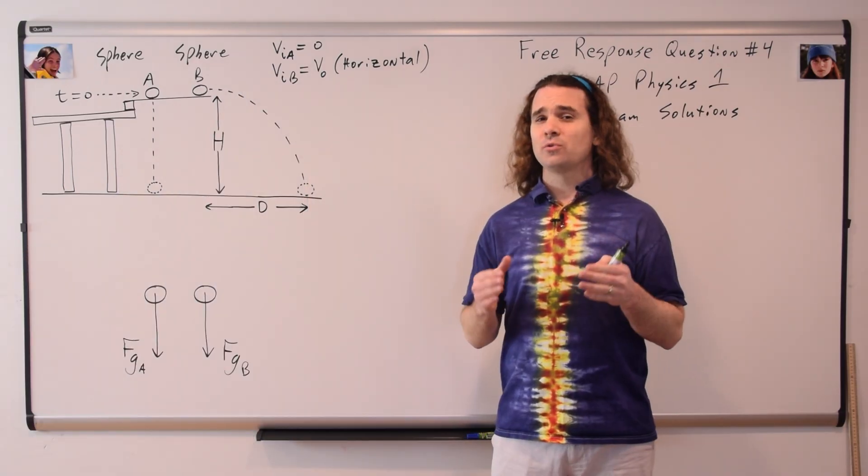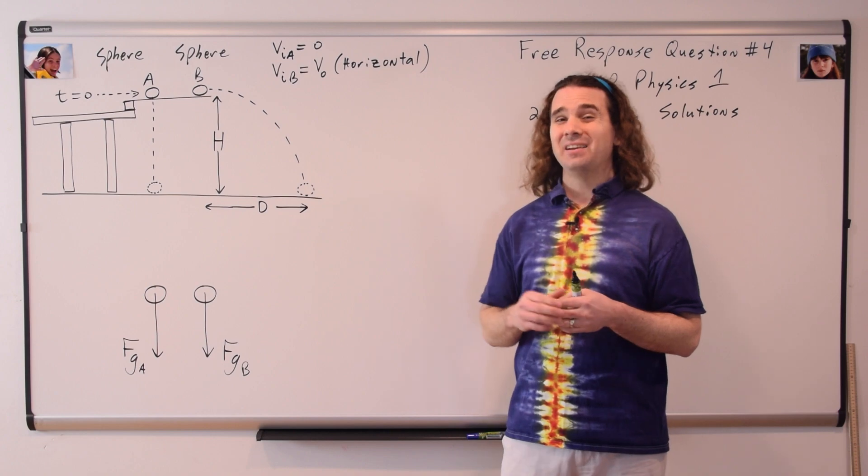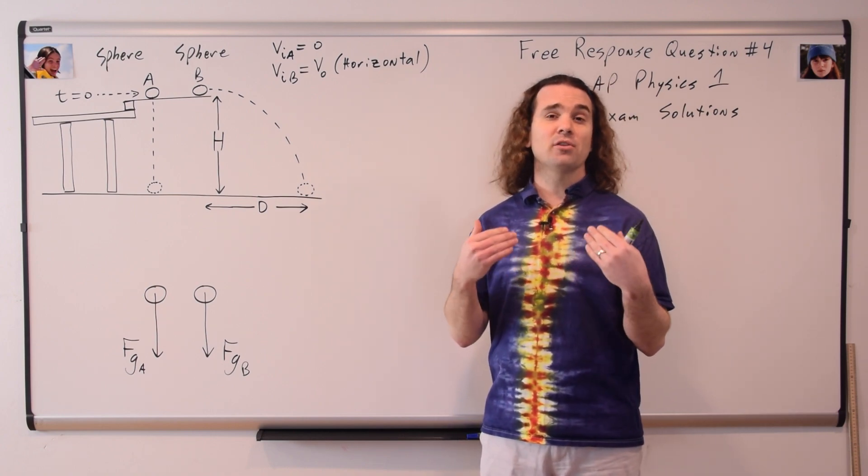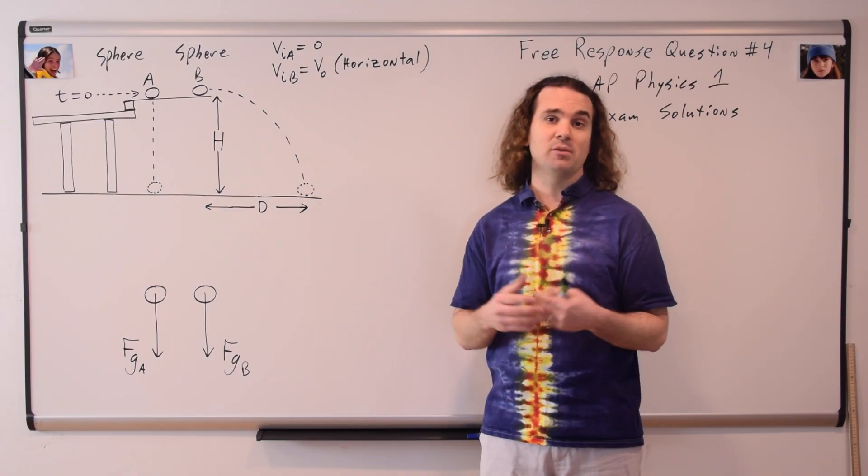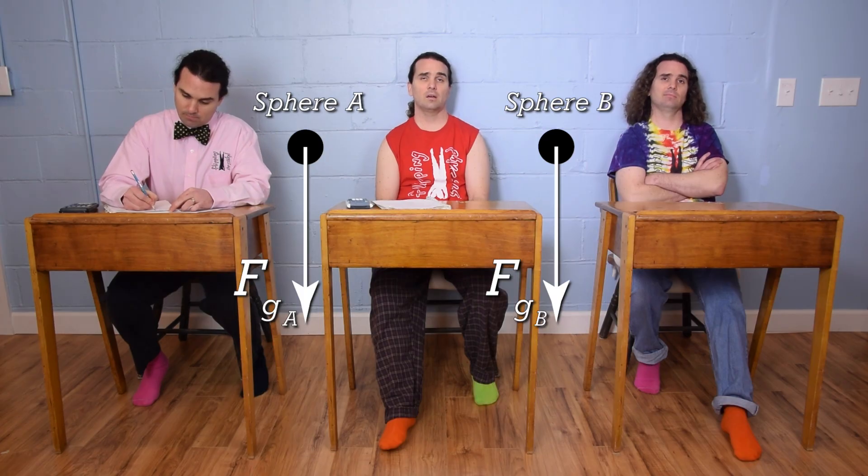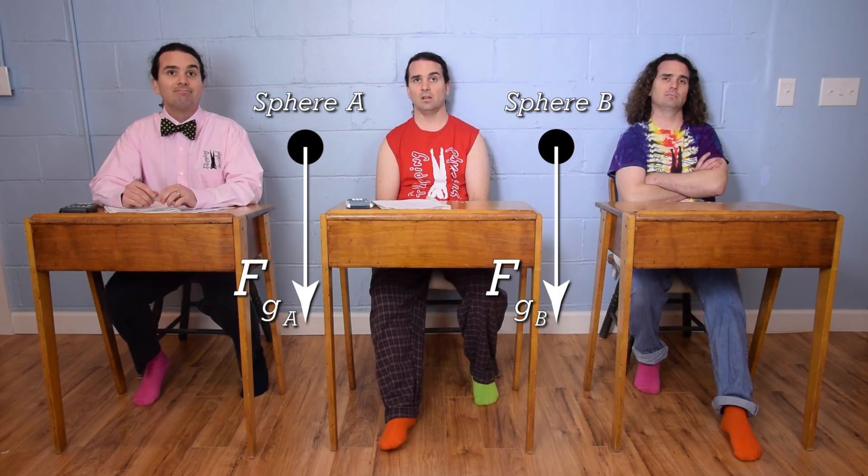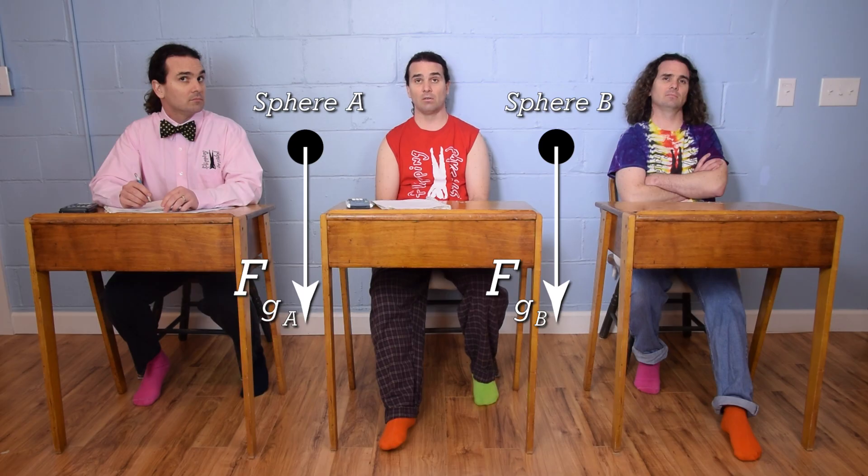That is true that the only force acting on each sphere is the force of gravity, however, could you please also explain why all the other forces are not in the free body diagram? Okay, there is no string or rope, so no force of tension. There is nothing pushing on the spheres while they are in the vacuum that you can breathe, so no force applied. The spheres are not touching a surface, so no force normal or friction force.